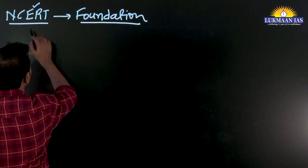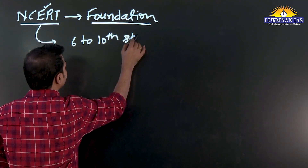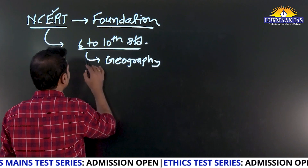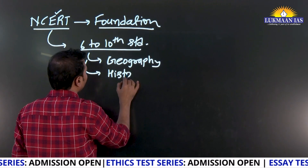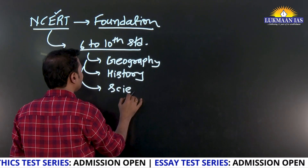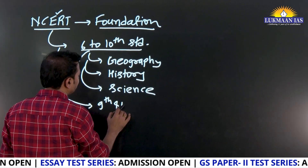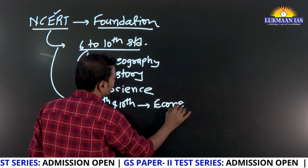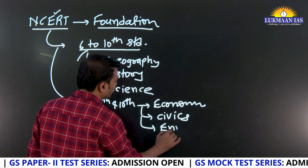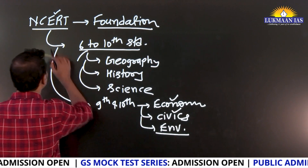You should read 6th to 10th standard NCERTs of Geography, History, Science, and thereafter 9th and 10th Economics and Civics. Environment has a separate book, so take that, but Economics and Civics should also be covered.